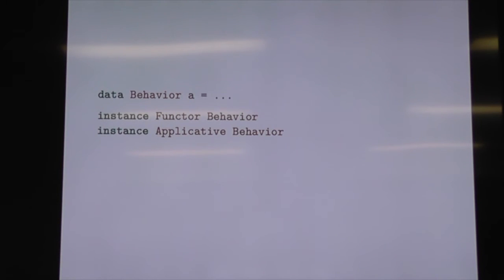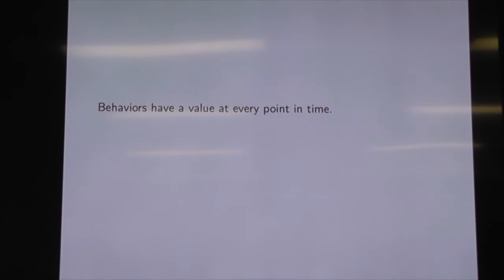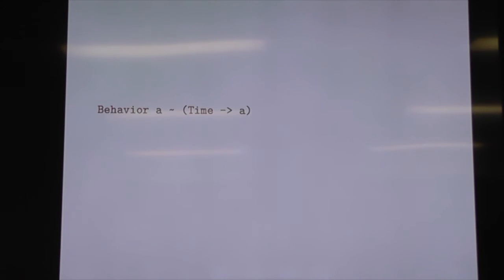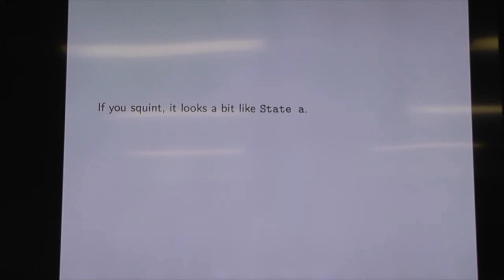Behaviour has an applicative instance along with its functor instance, which allows some good things on its own. They have a value at every point in time — it doesn't matter how many points in time there are, every point in time is covered. The semantics: it's like a function from time to a value. If you squint, you can kind of view that as state — state has something initially and then you change it, and its value changes at various points in time. It's not normally quite as explicit about the points in time where things happen.